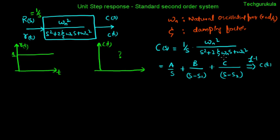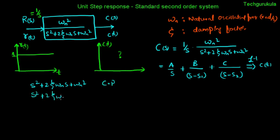In general, the time response of a system depends on the poles of the system, which are the roots of the denominator polynomial. We call this denominator polynomial the characteristic polynomial. When we equate it to zero, we get the characteristic equation. The roots of the characteristic equation are the poles of the transfer function, which determine the time response of the system. We need to find s1 and s2 and investigate their nature.